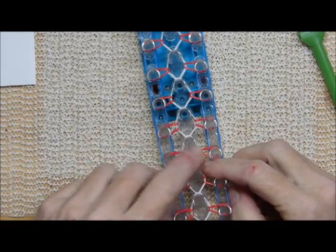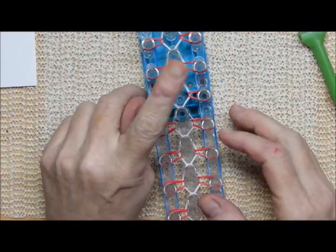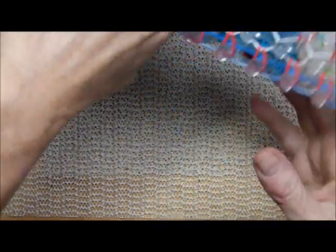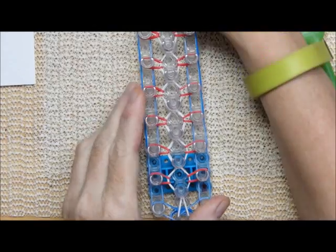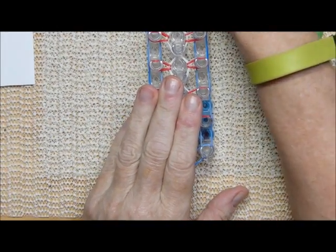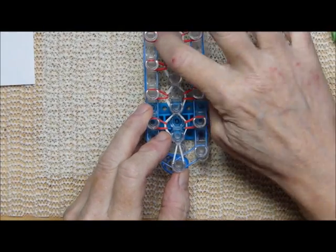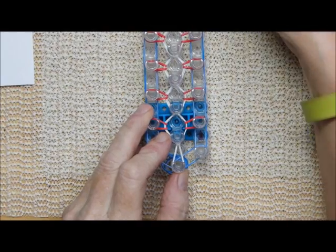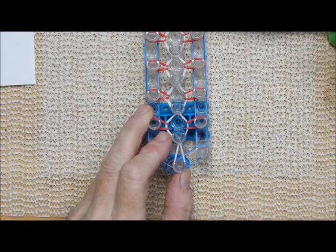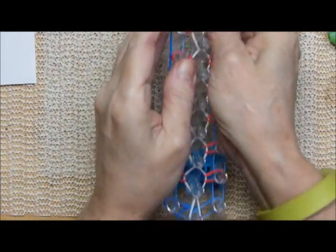I think most of you found that fairly simple, I hope. Now, very, very important. Turn the loom back around. So, the arrows are going this way, because we're going to place more bands. And if you don't, you'll have a lot of bands to pick off and replace again. Let's hold on a second. One of these got twisted, and I don't like it.